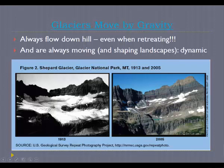Glacier National Park in Montana has famously been losing its glaciers over time. You can see a picture of the Shepherd Glacier in 1913 compared to 2005 — much of the ice that started high up has melted, and what remained was flowing downhill and eventually disappearing from the landscape.